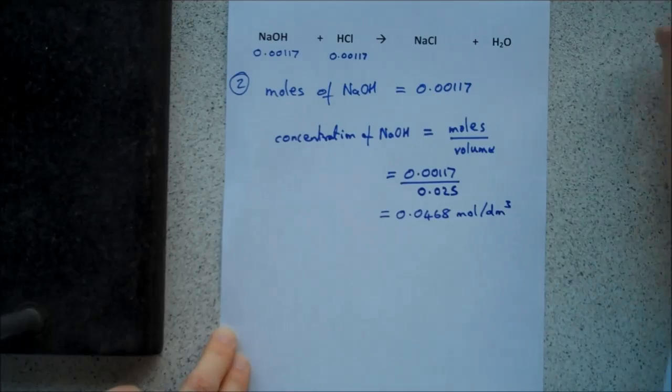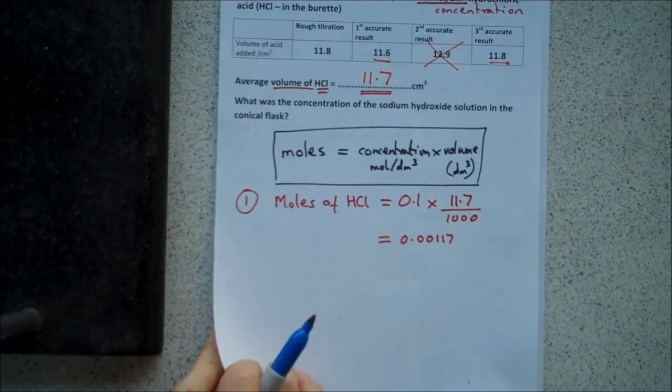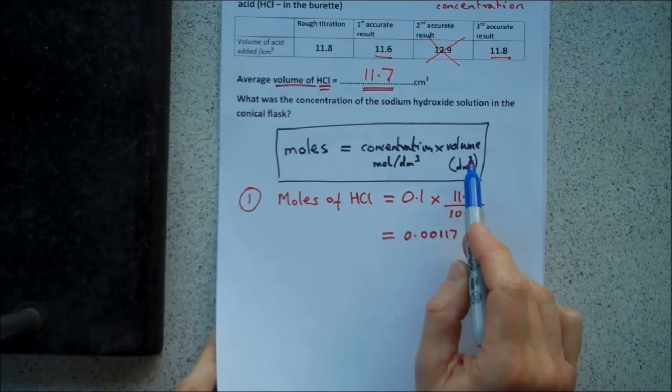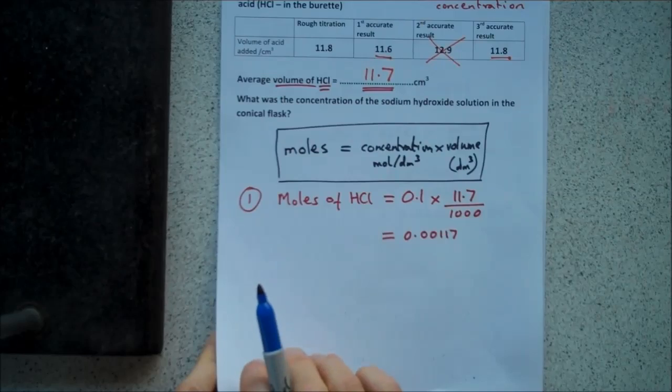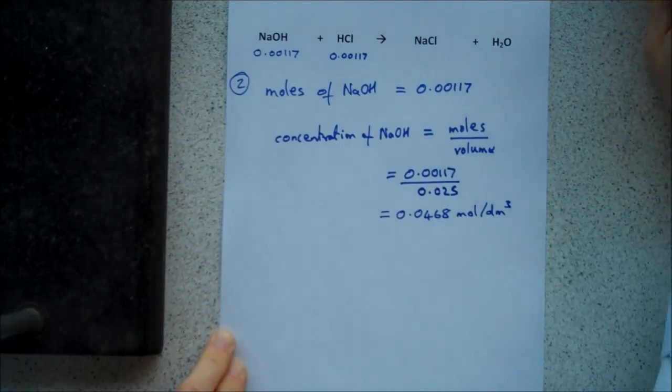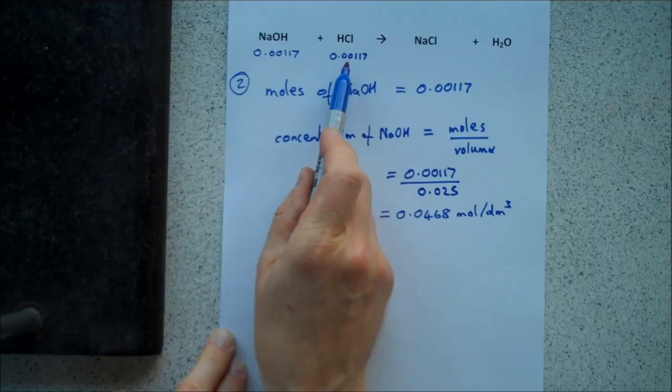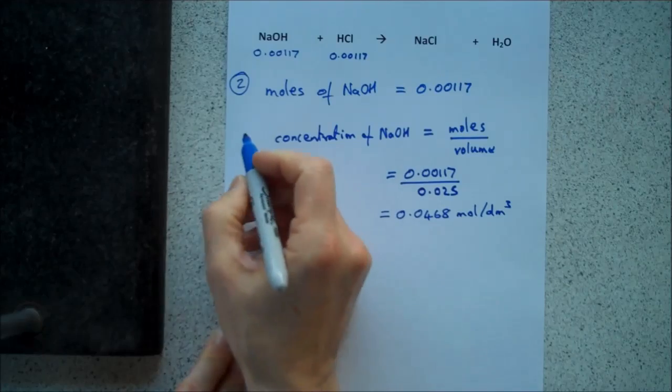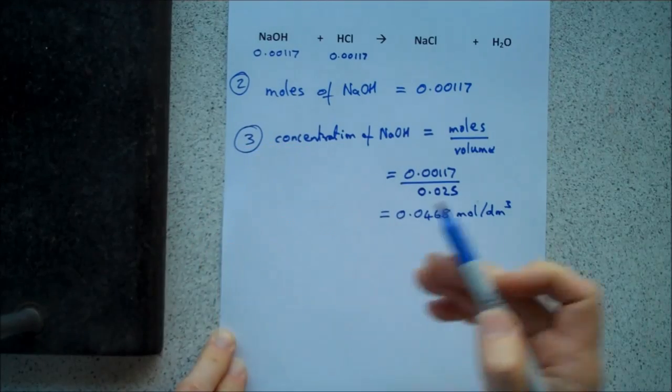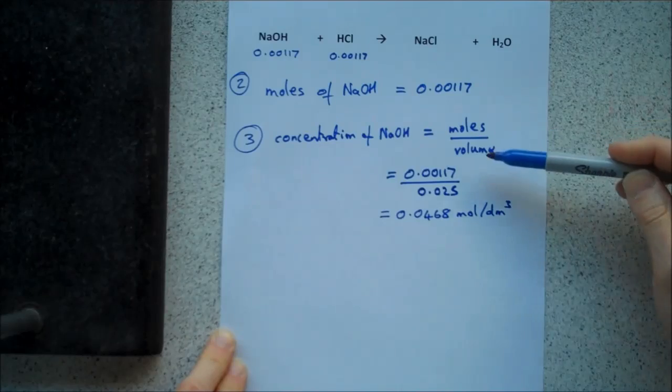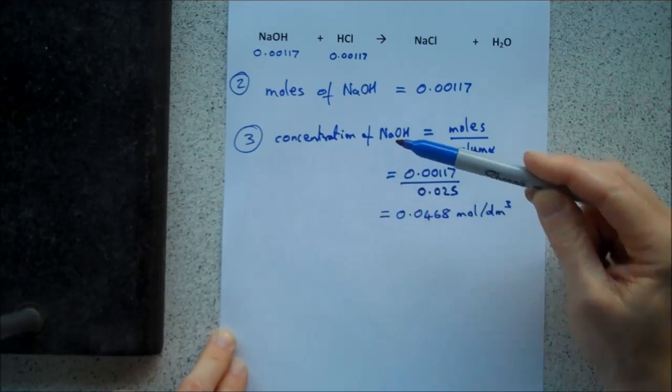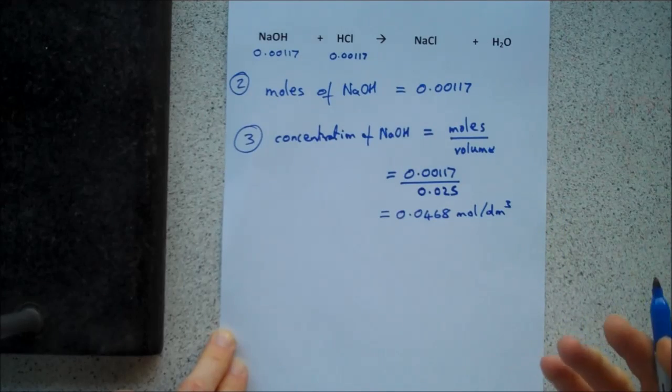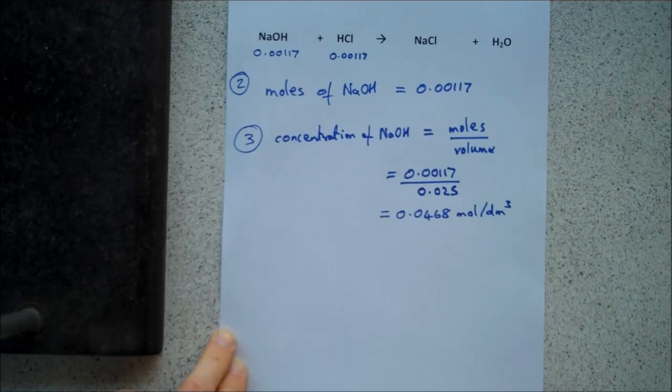There are three steps. Just to recap, step one, you work out the moles of whichever solution you know both concentration and volume of. In this example, it was HCl. Step two, you use the balanced equation to tell you that the moles of the other chemical must be exactly the same because one reacts with one. And then step three, you make use of the moles to work out something about the sodium hydroxide. In this example, you were asked the concentration of sodium hydroxide. You could have been asked the mass in grams of sodium hydroxide, but that's a different calculation.